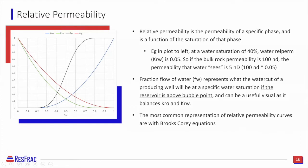The fractional flow curve, shown as the black curve, is a ratio of the water relative permeability to the water plus oil relative permeability, and is actually synonymous with water cut. We will use that today in history matching models.